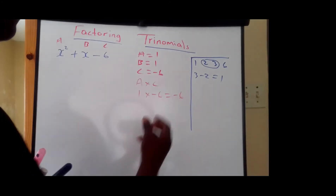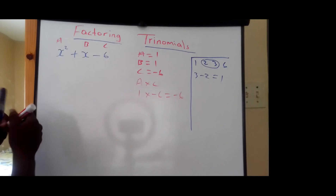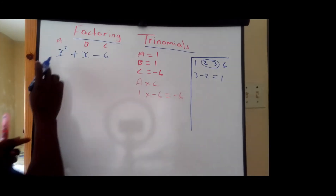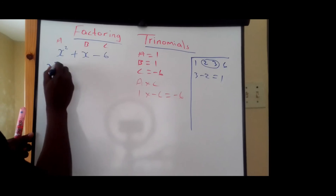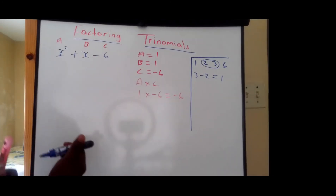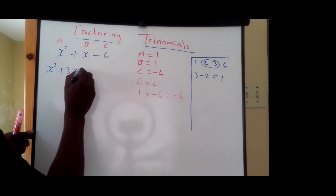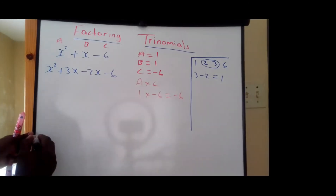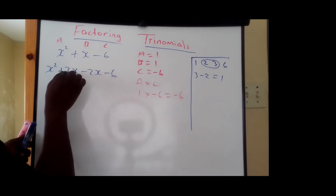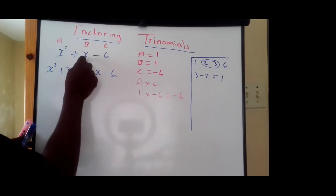I have to make one of these numbers negative. Therefore, I can write: X squared plus 3X minus 2X minus 6. See that? So if you look here, you can see that 3X minus 2X would give us X. So we have the value of X here.